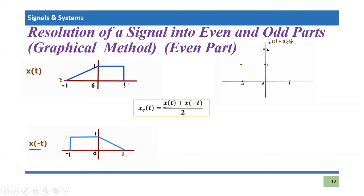Next, at t = 1, the amplitude of x(t) is one, and x(-t) is zero. So zero plus one would become simply one. If we connect these points, the graph of the signal will look like this. After t = 1, it is simply zero, and before t = -1, it is simply zero. So this is the graph of x(t) plus x(-t).